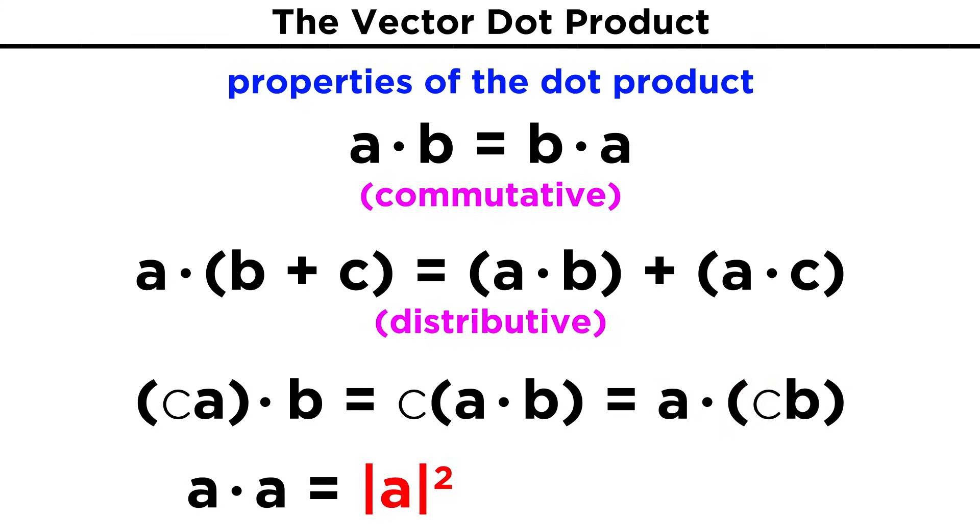A dot A is simply the length of A quantity squared. And the zero vector dot A is the number zero, because we are just multiplying each component of A by each component of the zero vector, which are all zeros, and then adding all of those zeros up to get zero.